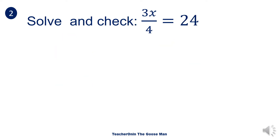Let's have another example. Solve and check: 3x over 4 is equal to 24. So we have a fraction here. The first thing we will do is look for the multiplicative inverse of 3 fourths. Let's rewrite the equation as 3 over 4 times x is equal to 24.